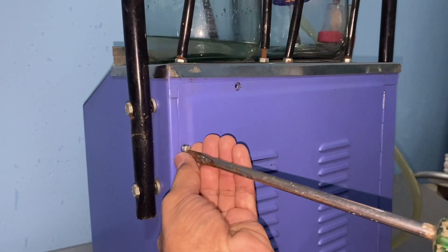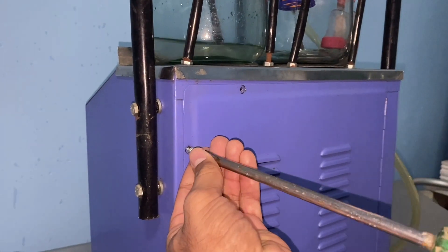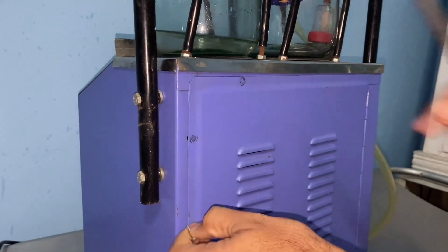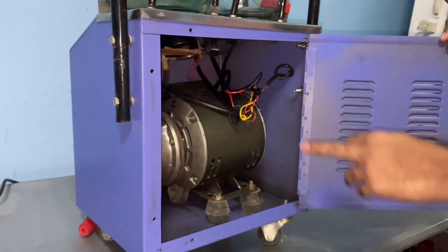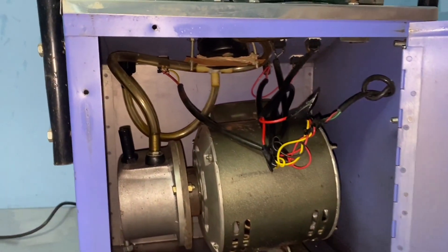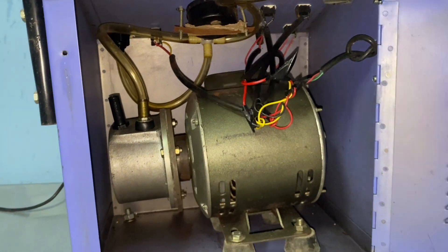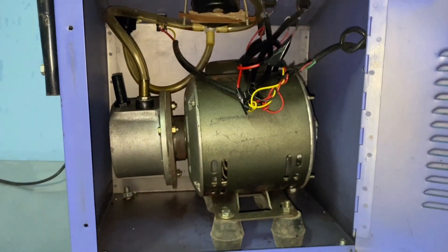When there is minimal suction, you can open the machine by loosening a few screws on the back side. This is the suction machine which needs oil replacement.